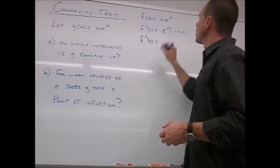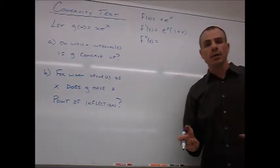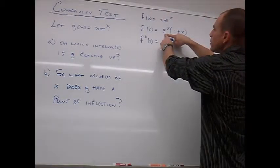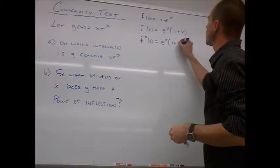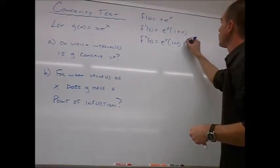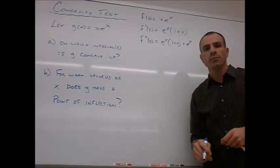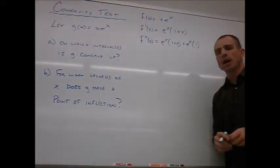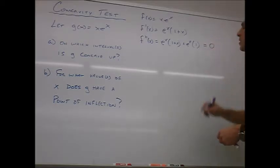We need f''(x). We have a product: e^x times the quantity (1 + x), so we use the product rule. The derivative of e^x is e^x — keep the second factor, giving e^x(1 + x). Then plus: keep e^x and take the derivative of (1 + x), which is 1. So our second derivative before simplification is e^x(1 + x) + e^x · 1. We need to find when this equals zero or does not exist.